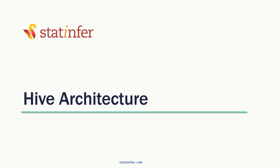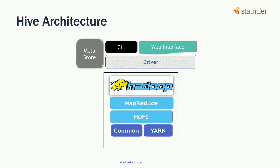If we look at the Hive architecture quickly, within Hadoop you have MapReduce, HDFS, common jar files, common Java libraries, and Yarn for cluster management. On top of it, there is a Hive driver — a connector between Hadoop and Hive. Then there is a command line interface where we write Hadoop commands, or alternatively a web interface. Mostly we code in the command line interface in Hive. There is also a metastore where all the metadata will be stored.